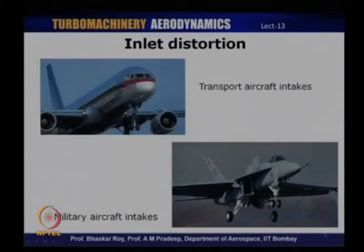In a subsonic transport aircraft, the intake is straight and axisymmetric with a centerline coinciding with that of the engine. Military aircraft intakes, by contrast, have much higher geometric complexities and consequently much more problems with inlet distortion. That is why military aircraft engines are designed to withstand slightly higher levels of distortion compared to civil aircraft, where very high levels of distortion from the intake are not expected.